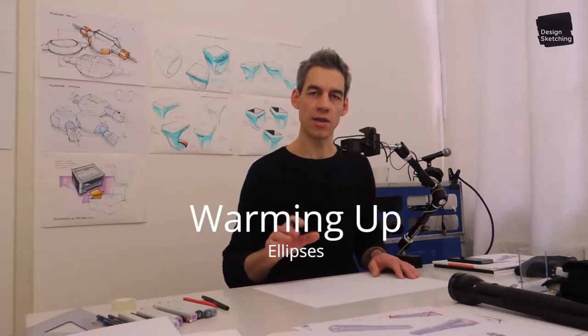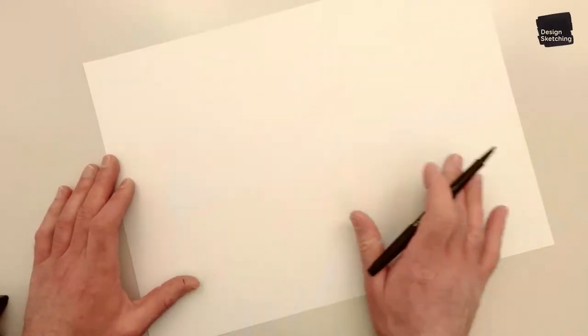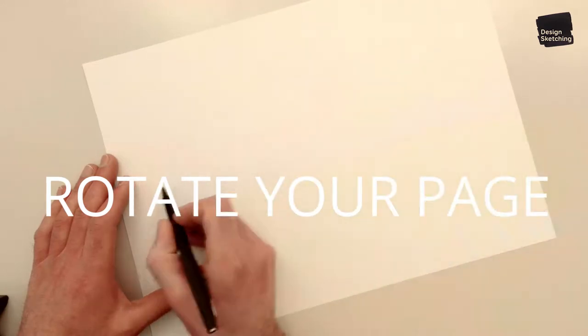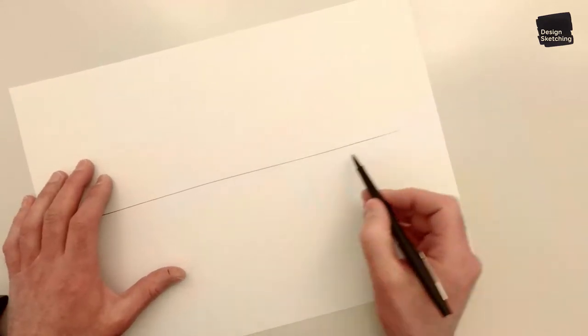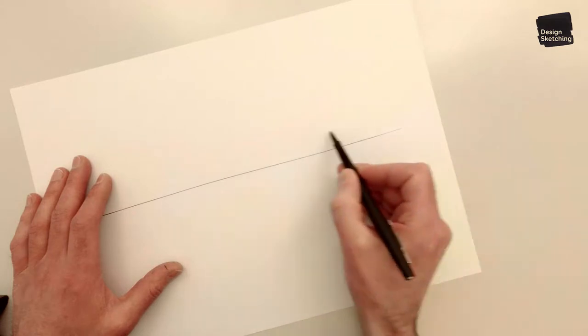Here's a little warming up exercise to do ellipses. Just like drawing straight lines, it's easier to rotate the page a little bit because this direction feels more natural for drawing your lines. And it's the same with the ellipses. So find a position that enables you to draw your ellipses more fluent.